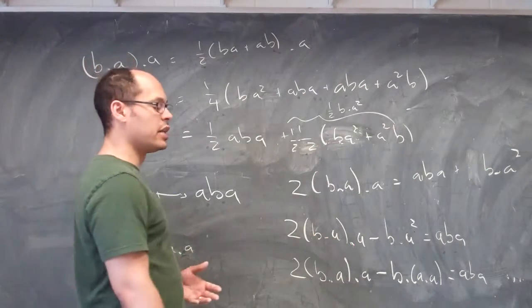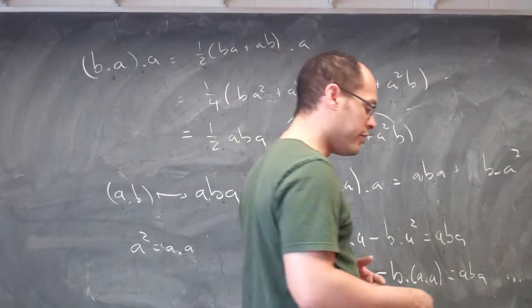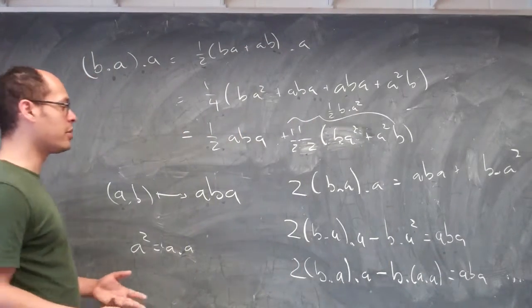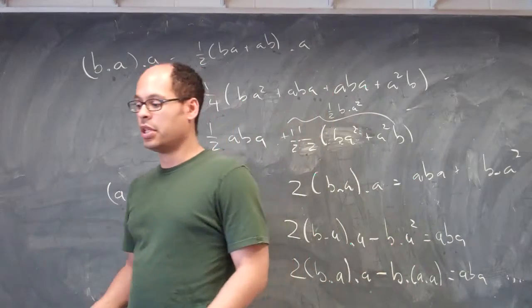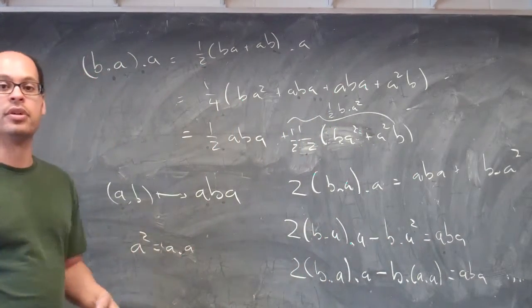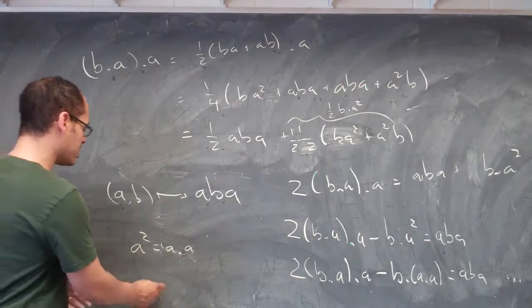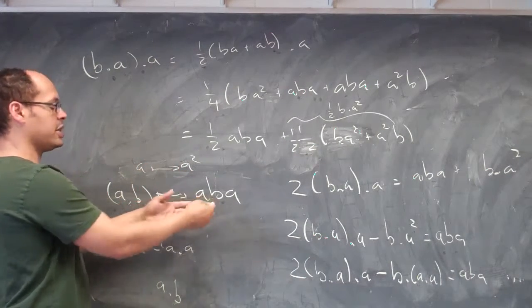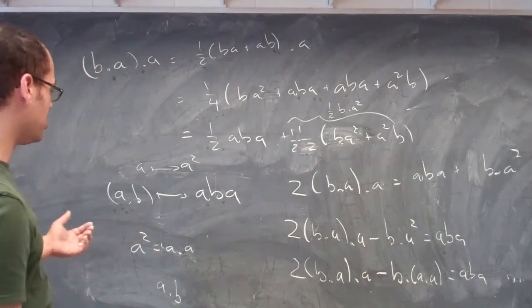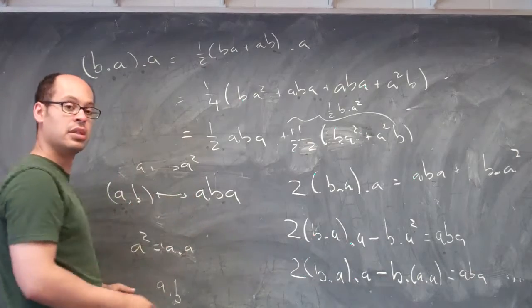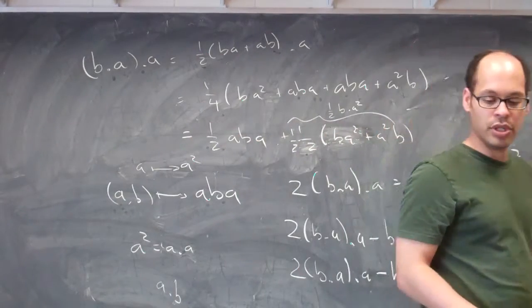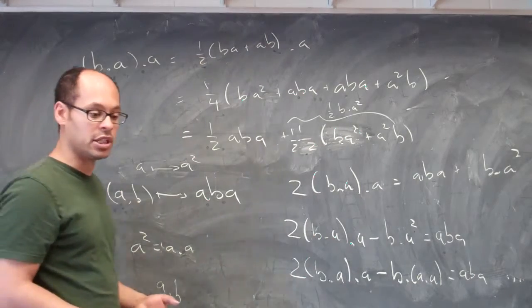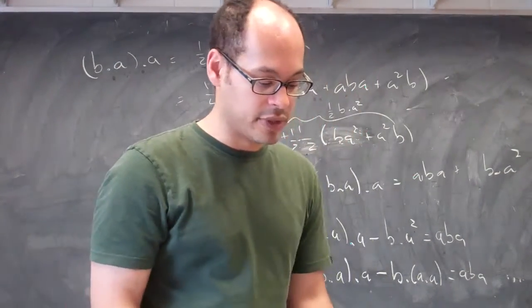Altogether, we've shown things in both directions: if you're closed under the lower dot, you're closed under A goes to A squared and AB goes to ABA; and conversely, if you're closed under those two operations, you're closed under the dot. So these two notions of what it means to be a special Jordan algebra and to have a homomorphism of special Jordan algebras give you the same definition when the characteristic is not 2.